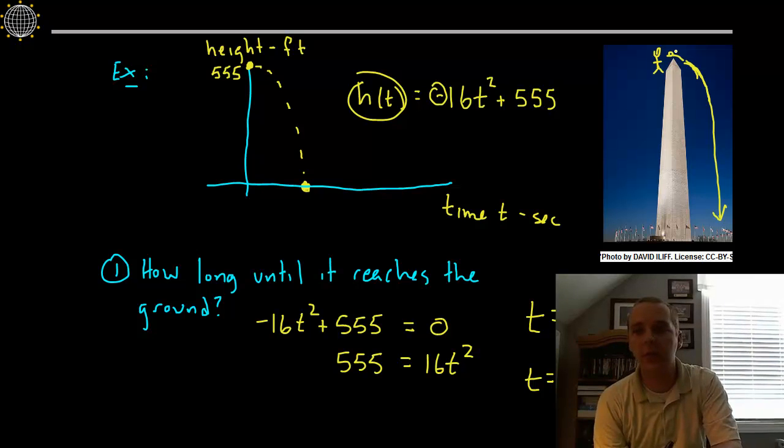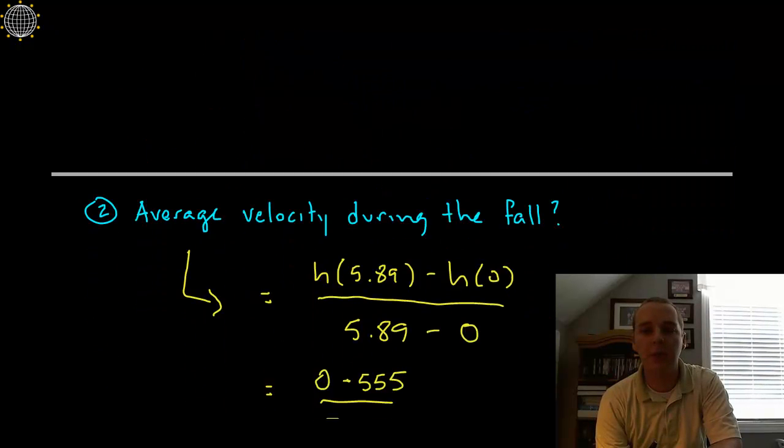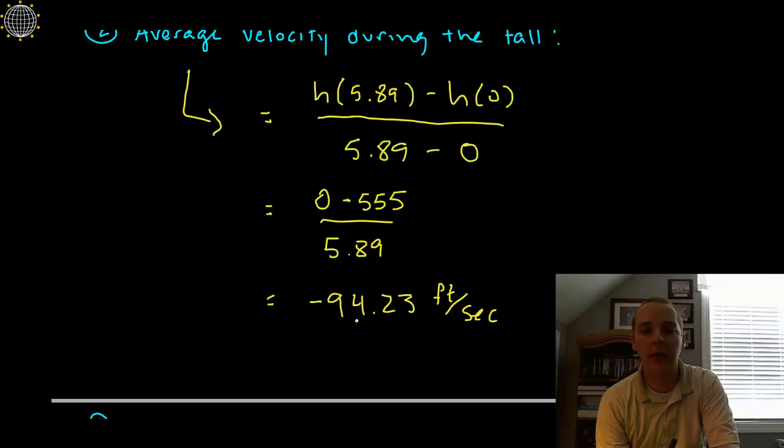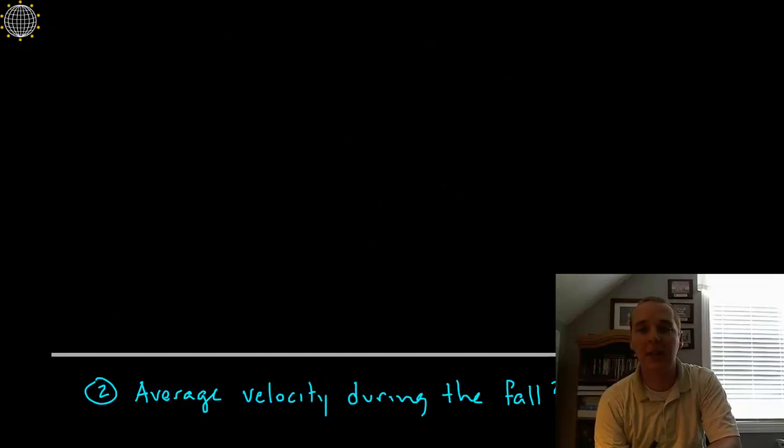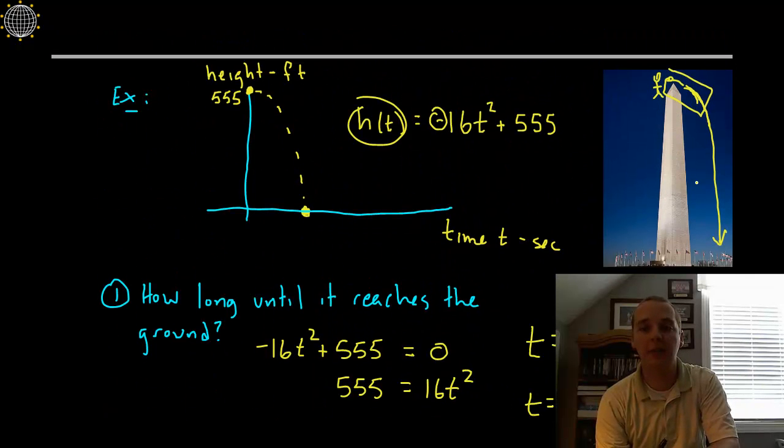So I'll bet, and you can do this at your home there, if you found the average velocity in just the first second, I bet it would be much much lower than -94 feet per second. It might only be negative 50 or negative 40 feet per second starting off and then it speeds up and then I'm sure during the last second it's probably moving faster than 94 feet per second.